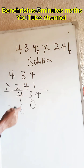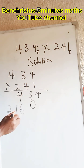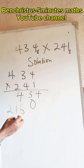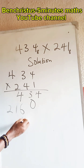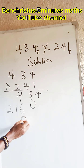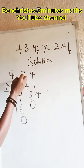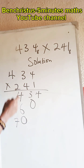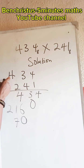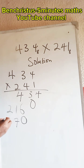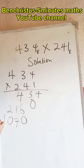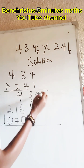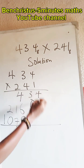Now the third digit: 2 times 4 is 8. 8 divided by 8 is 1 remainder 0 — write 0, carry 1. 2 times 3 is 6, plus 1 is 7 — not up to 8, write 7. 2 times 4 is 8. 8 divided by 8 is 1 remainder 0 — write 0, carry 1. Then we add all our answers together.